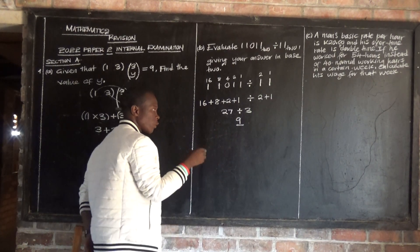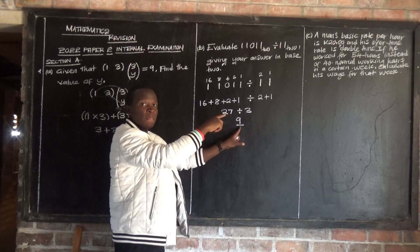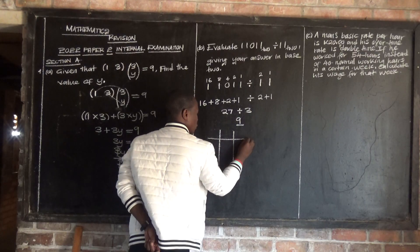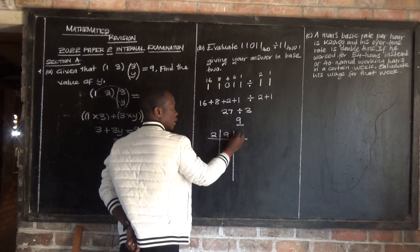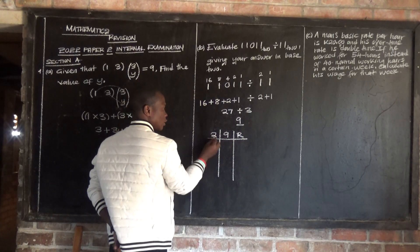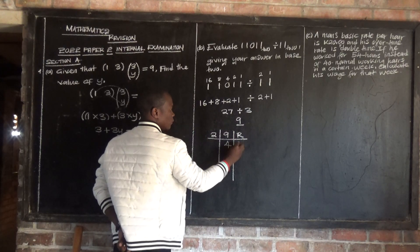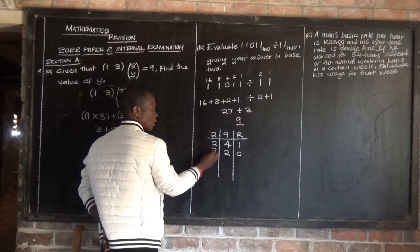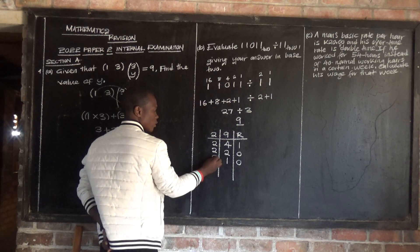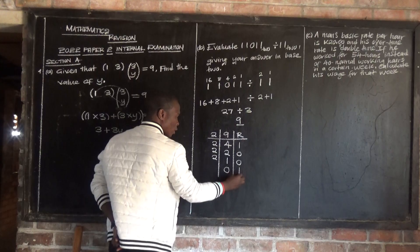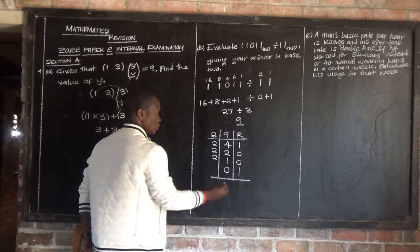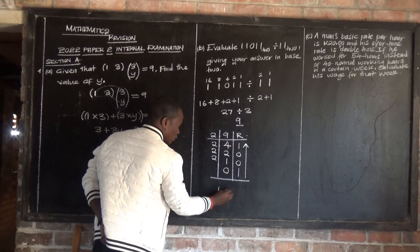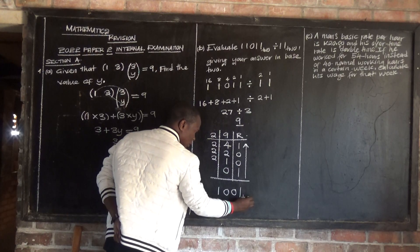But 9 in base 10 is not our answer — we need to convert it back to base 2. We repeatedly divide by 2: 9 divided by 2 is 4 remainder 1; 4 divided by 2 is 2 remainder 0; 2 divided by 2 is 1 remainder 0; 1 divided by 2 is 0 remainder 1. Reading remainders from the bottom, the answer is 1001 base 2.